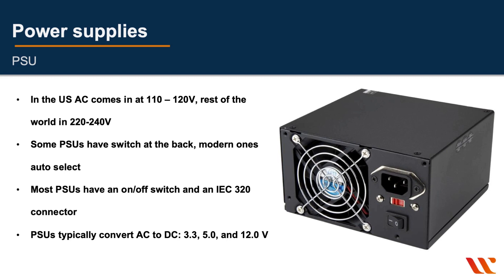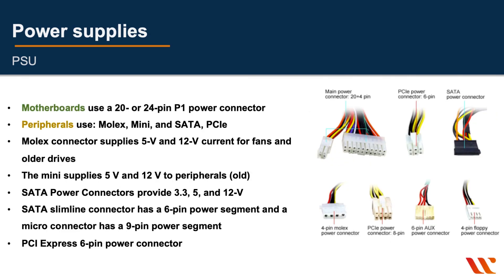PSUs also have an on/off switch, and the three-prong connector is called the IEC 320 connector. PSUs typically supply DC at 3.3 volts, 5 volts, and 12 volts. Most motherboards use a 20 or 24-pin connector, while peripherals use Molex, Mini, SATA, or PCI-E connectors. Molex connectors supply 5 and 12 volts and are used for fans and older drives. The Mini connector also supplies 5 and 12 volts. SATA power connectors provide 3.3, 5, and 12 volts, with a SATA Slimline variant featuring a 6-pin segment and a micro connector with a 9-pin connector.